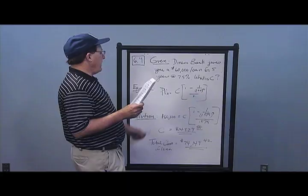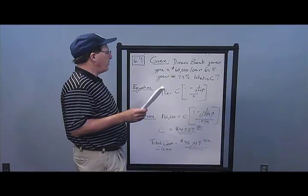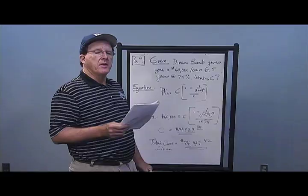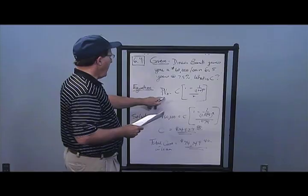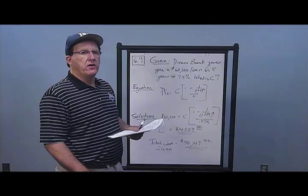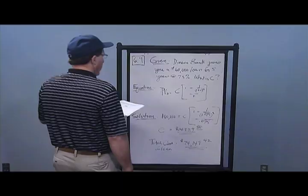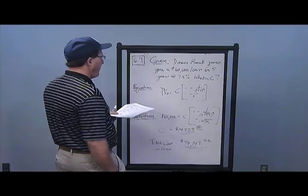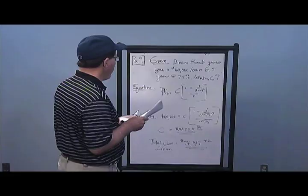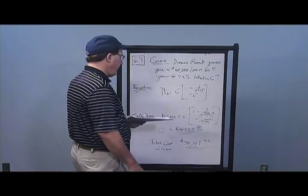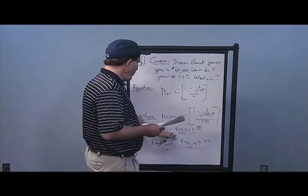In Problem 9, DeNiro Bank gives you a $60,000 loan for five years at 7.5% interest. What is the constant annual payment? Using the present value annuity formula: PVA is $60,000, C is unknown, R is 0.075, T is five years. Solving for C, I get $14,829.88 per year. In total, I will pay $74,149.40 — taking $14,829.88 times five — for the privilege of this loan.